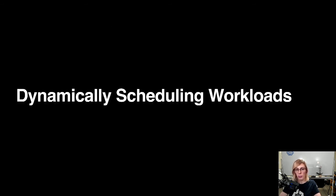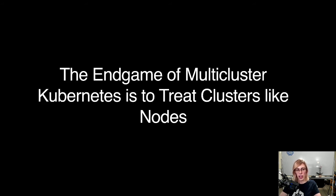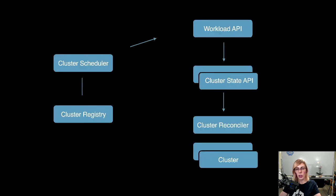We want to treat a workload much like we treat a workload within a cluster today. We specify abstract constraints that describe our requirements — like 'I want to put this on three geodistributed clusters in the US', or 'I want to run this on any cluster that runs workload X that we depend on' — and we let a scheduler make that decision. We really start to capture the intent of someone configuring the workload without directly coupling things together.